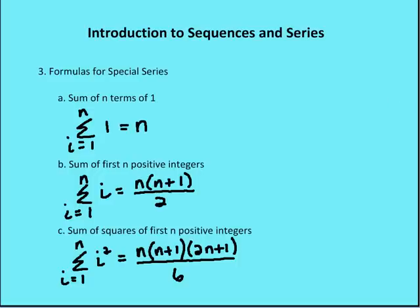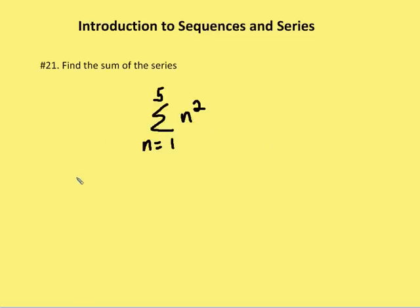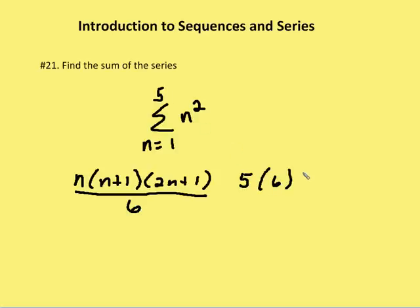So we go back to our problem, and we write the formula n times n plus one times two n plus one, all over six, and that's going to be our sum. So we know the n is five, times five plus one is six, times two times five plus one, which is 11, all over six. These cancel or reduce to one, and I'm left with 55 as the sum.